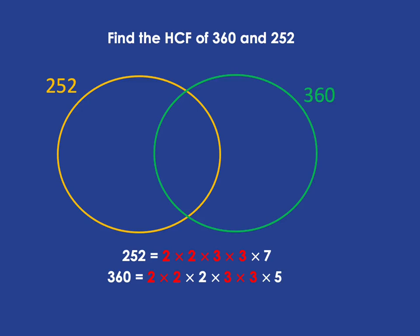And in the overlap between the circles, I'm going to put the things that they share. So start with the things that they share. They both have a 2 and 2 times 2. They both have a 3 times 3. So that's their share. Then to complete 252, I put in the 7. To complete the 360, I put a 2 and a 5.